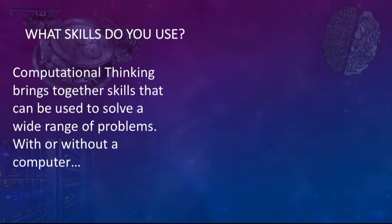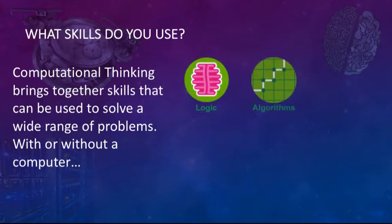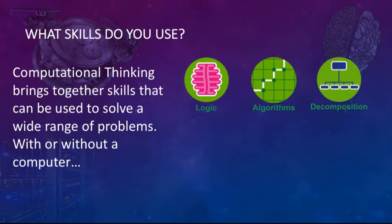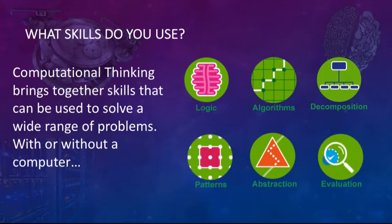What skills do you use? Computational thinking brings together skills that can be used to solve a wide range of problems with or without a computer. You've got logic, algorithms, decomposition, patterns, abstraction, and evaluation. Let's have a look at some examples for each one of these so you can see some real-life problems and how they can be solved.